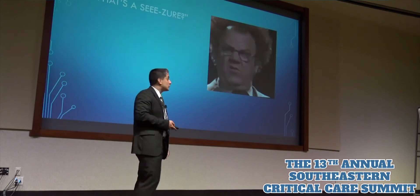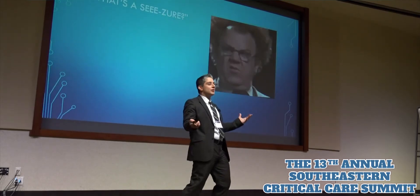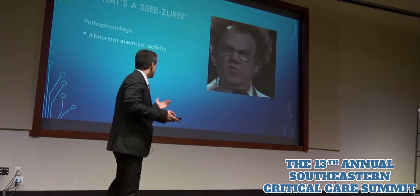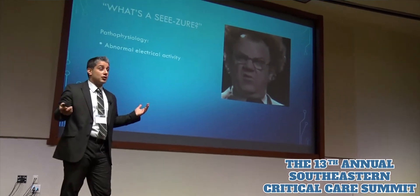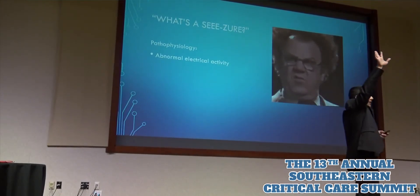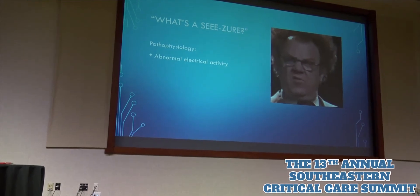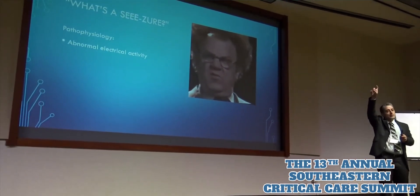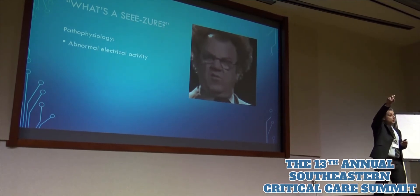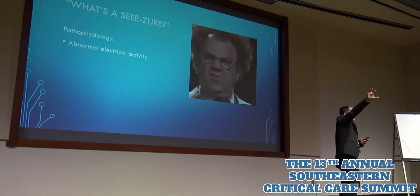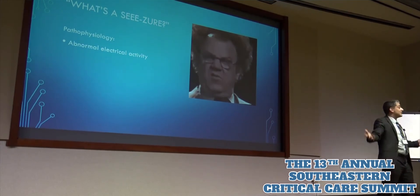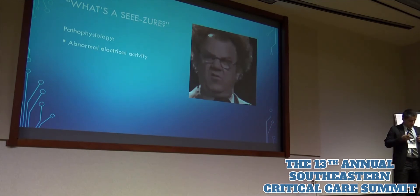Before we can talk about status, first we need to talk about what's a seizure. There are really two ways to answer this question. The first one is the pathophysiology: a seizure is basically just abnormal electrical activity in the brain. To illustrate this, I want everybody to raise their right hand up in the air and move your index finger. Now imagine that the neurons controlling your index finger suddenly gain the ability to control the surrounding cortex, such that your entire hand started to flex, then your entire arm, then your other arm, and then it basically spreads from there. That's basically what happens during a seizure.